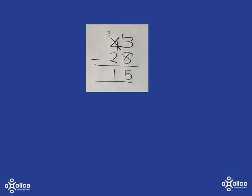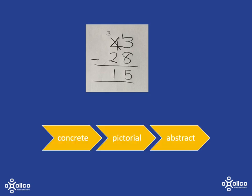So what we want to do is build slowly towards this abstract way of doing it so that they actually build up an understanding of how and why it works like that. We're going to go through that process we've been talking about over and over: we'll start with the concrete, then move to the pictorial, and once learners are comfortable with that, we'll start to introduce the abstract way of doing it.